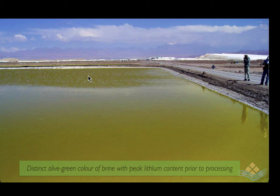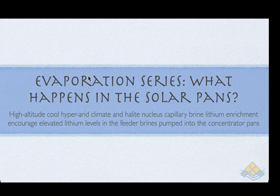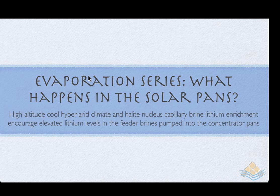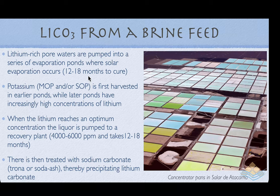The final concentrated ponds, visible on the ground with the stratovolcano as the ultimate source of lithium in the background, represent the result of pumping brines from the halite nucleus subsurface into successive pans. We are in a high-altitude, cool, hyper-arid climate where the halite nucleus capillary evaporation has already produced lithium enrichment. Brines coming out into the pans are just about at halite saturation with lithium already in excess of 1,200 ppm. Taking those lithium-rich pore waters through successively more saline pans over 12 to 18 months ultimately yields a brine with between 4,000 and 6,000 ppm.